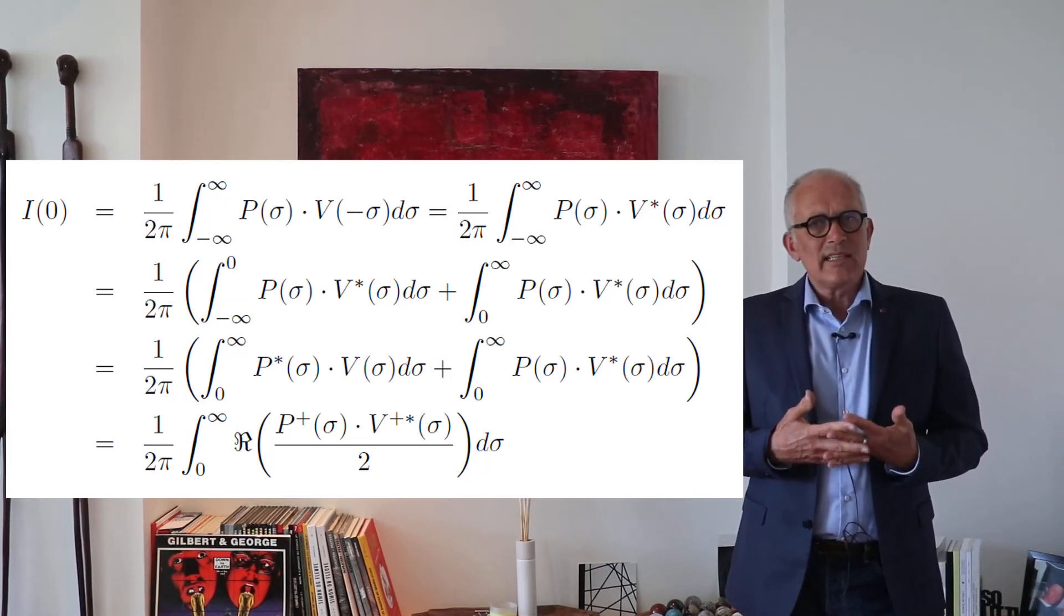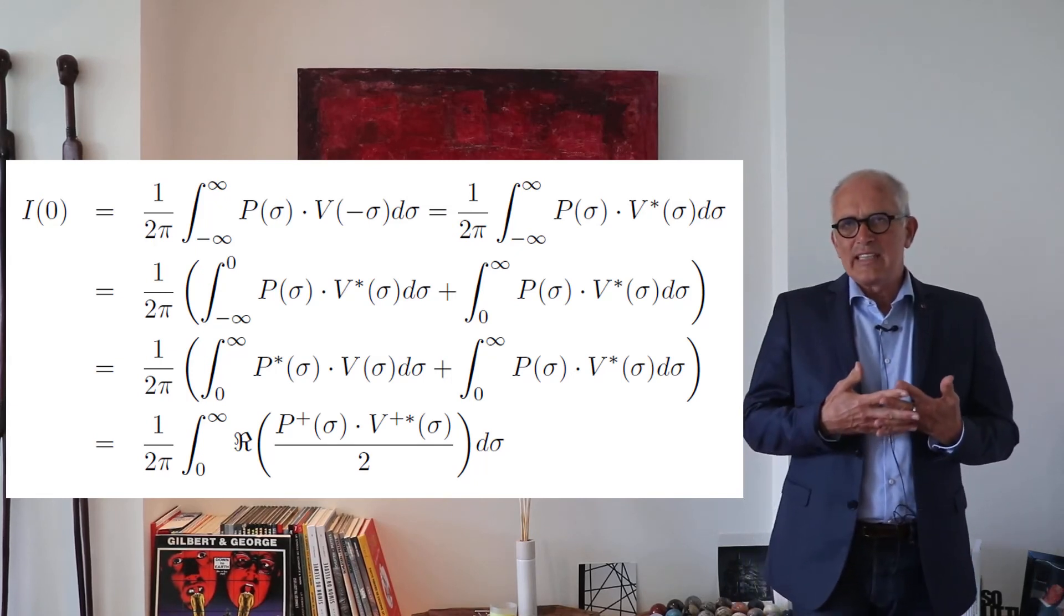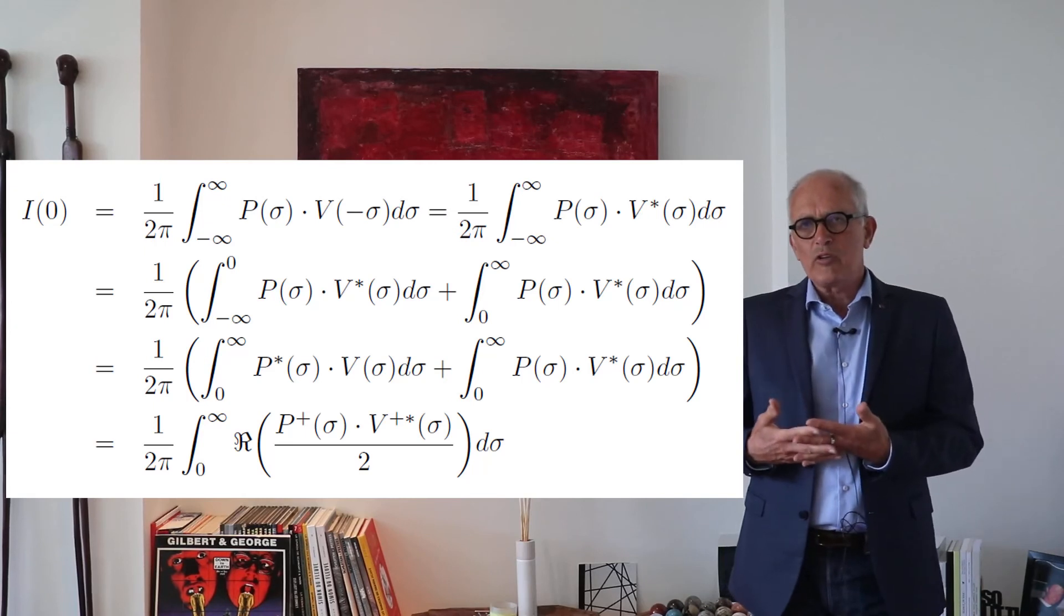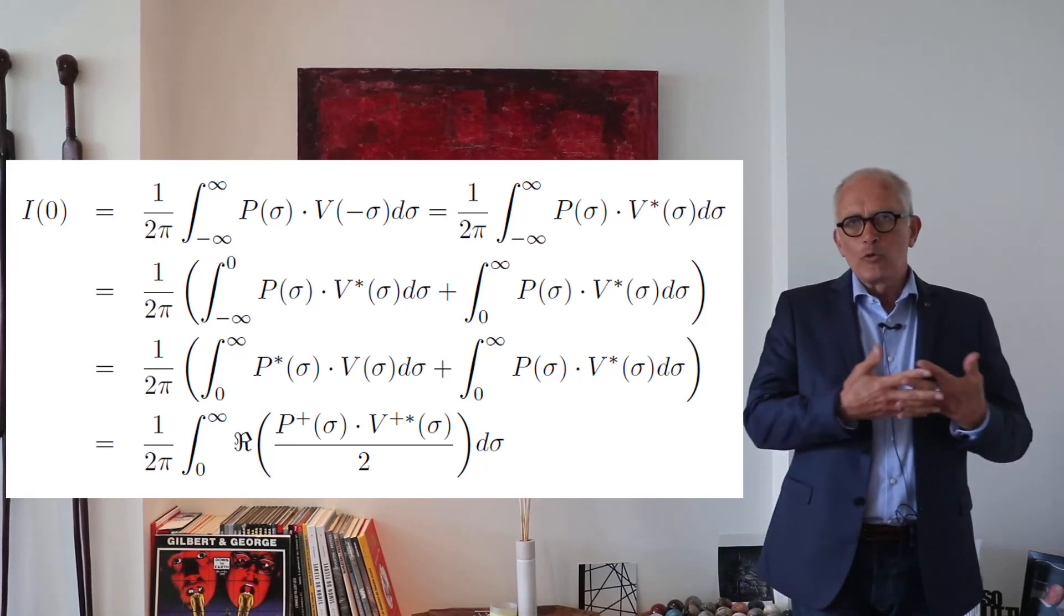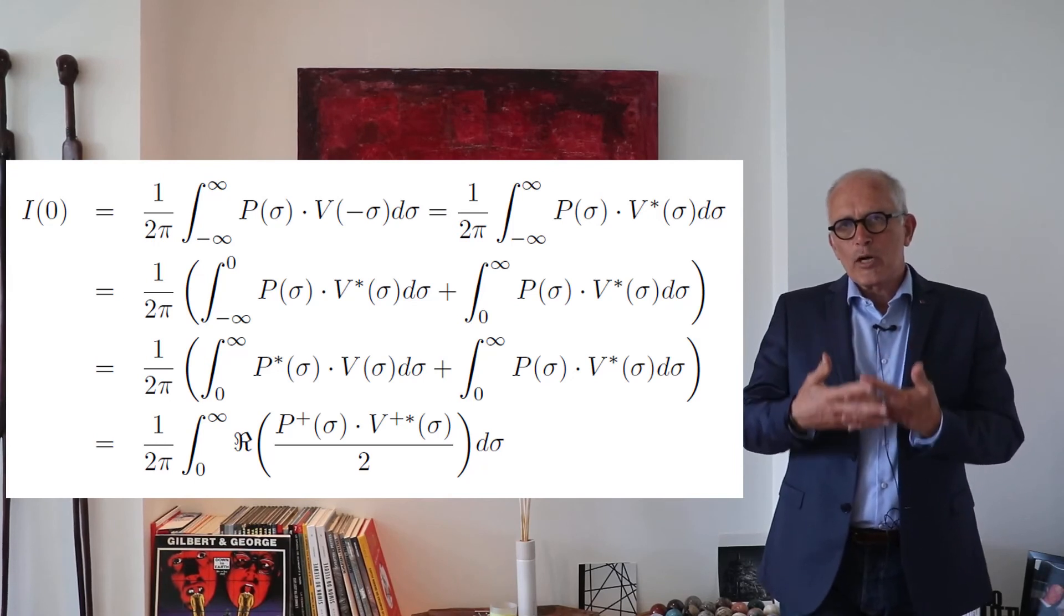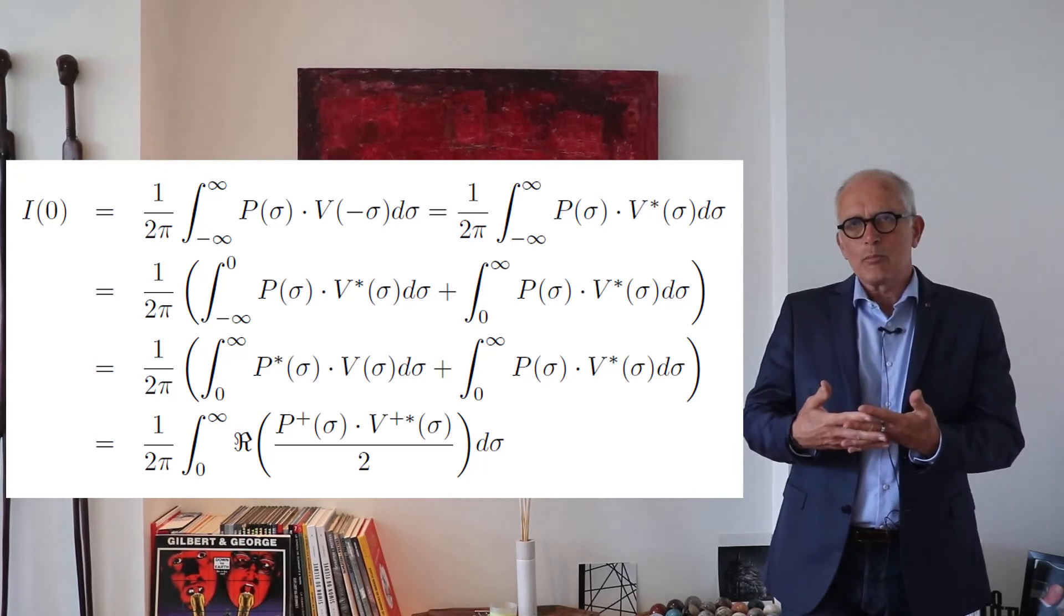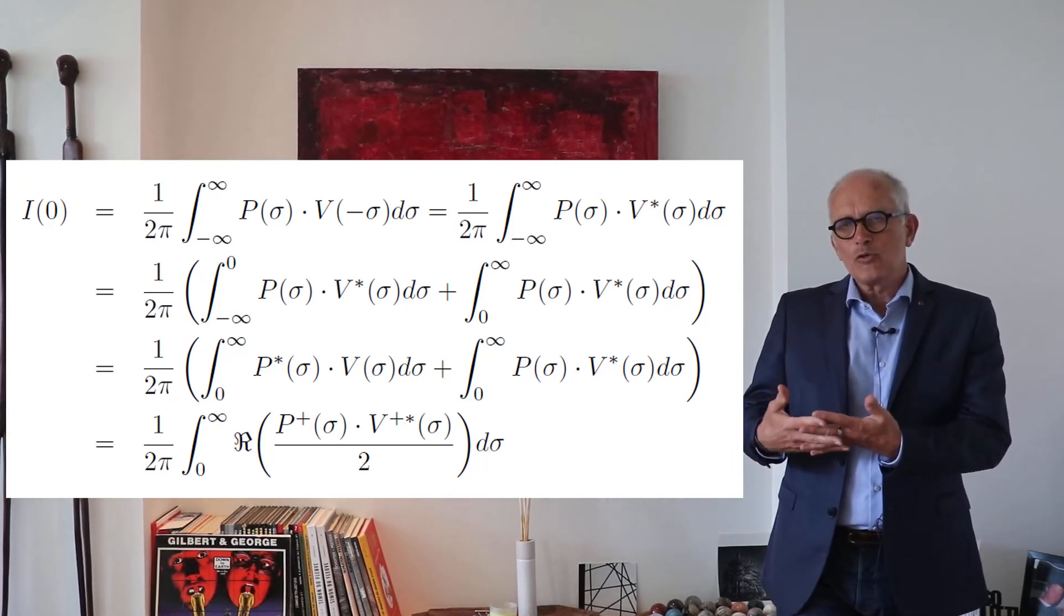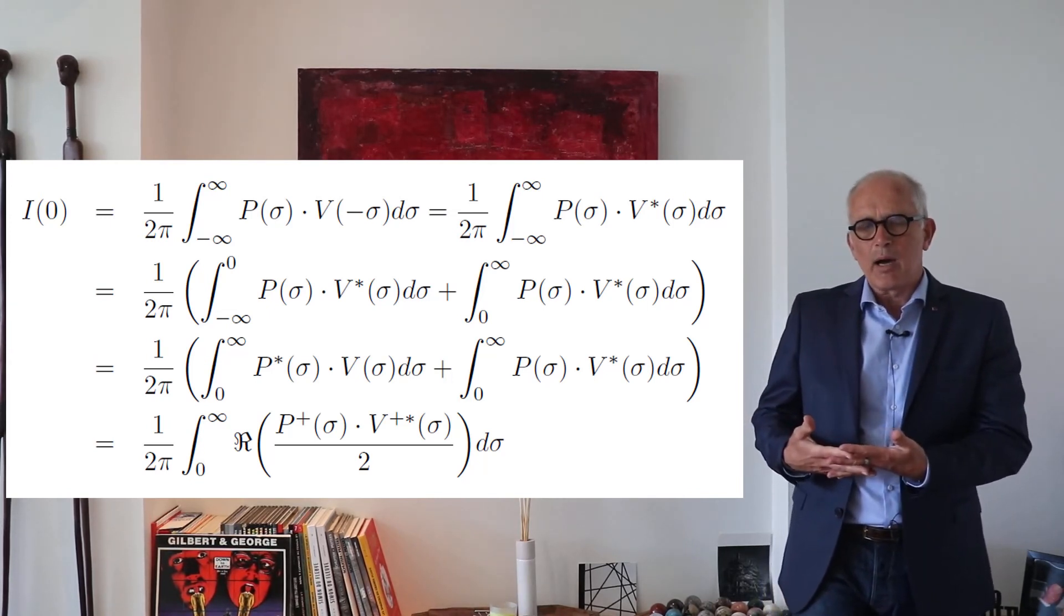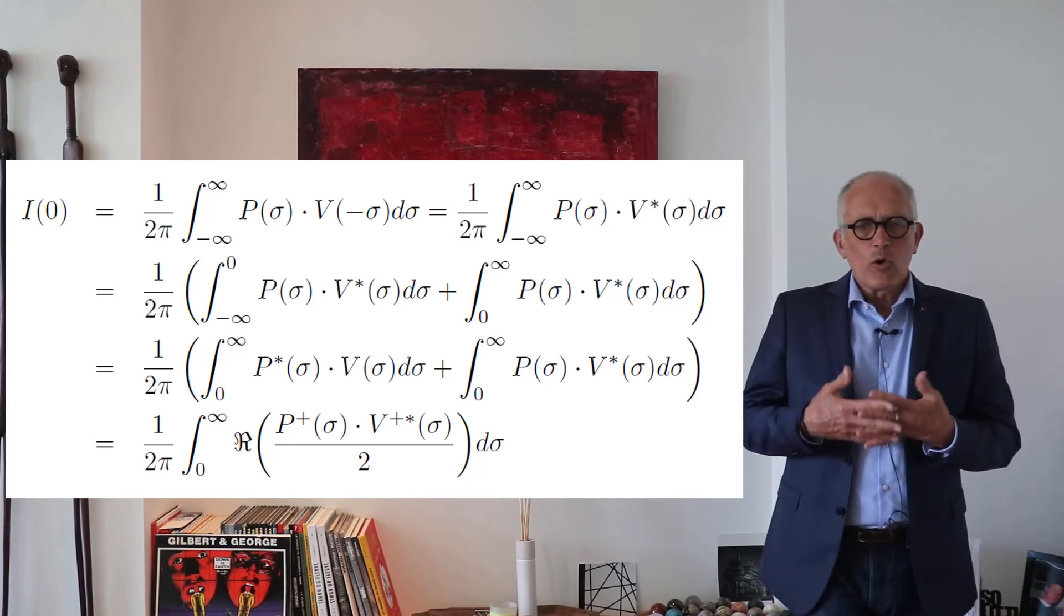But you see that in the end, the active intensity is the integral over all positive frequencies of the real parts of the product of the pressure one-sided spectrum times the complex conjugate of the velocity one-sided spectrum, all divided by two.